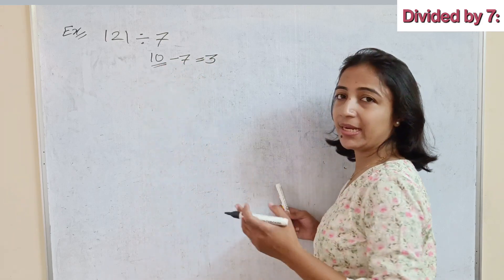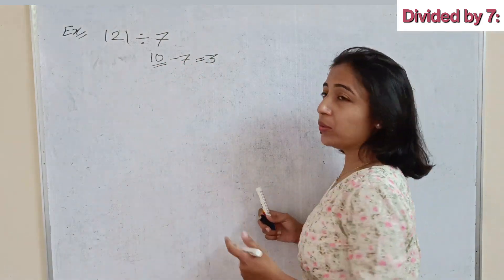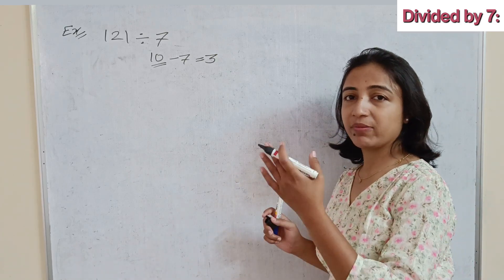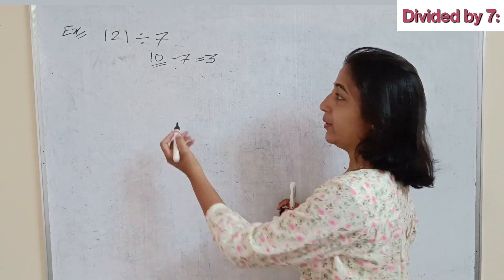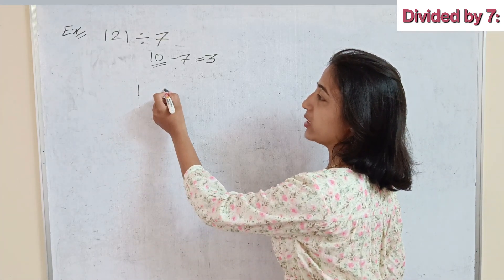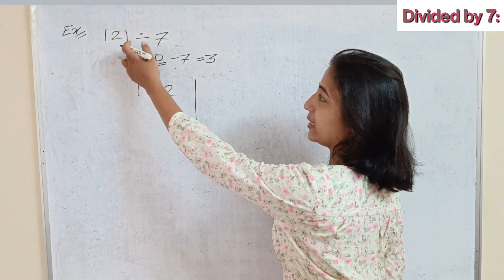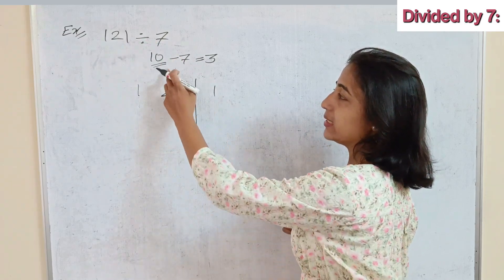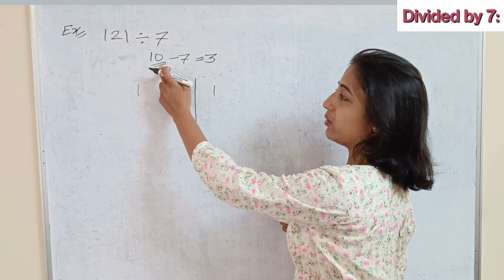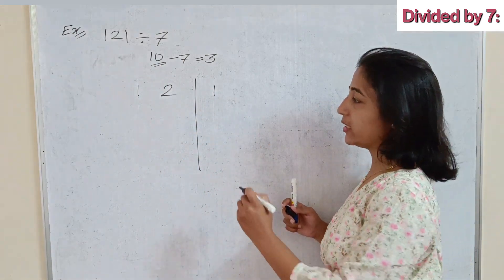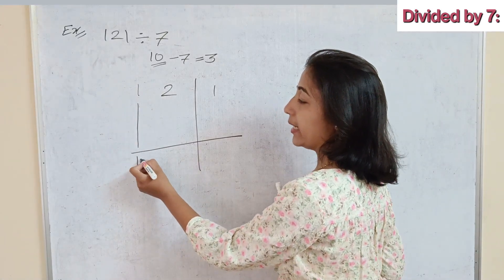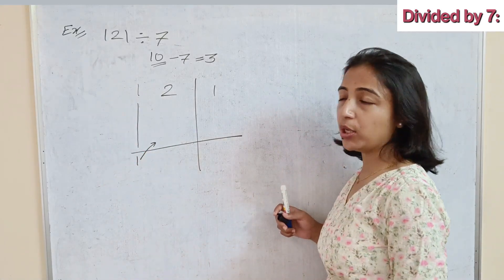Now apply the same regular process of division that we used in the previous videos for dividing by 8, 9, and 99. Here we break the number 121 into two parts: '12' on the left side and the last digit '1' on the right side. Since the base number is 10, which contains one zero, we keep a single digit on the right. Take the first number as it is, and write 3 times that 1 alongside it.